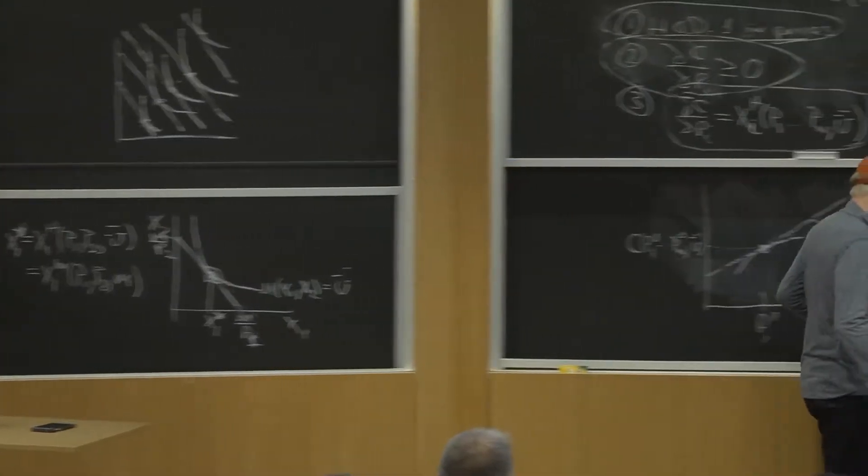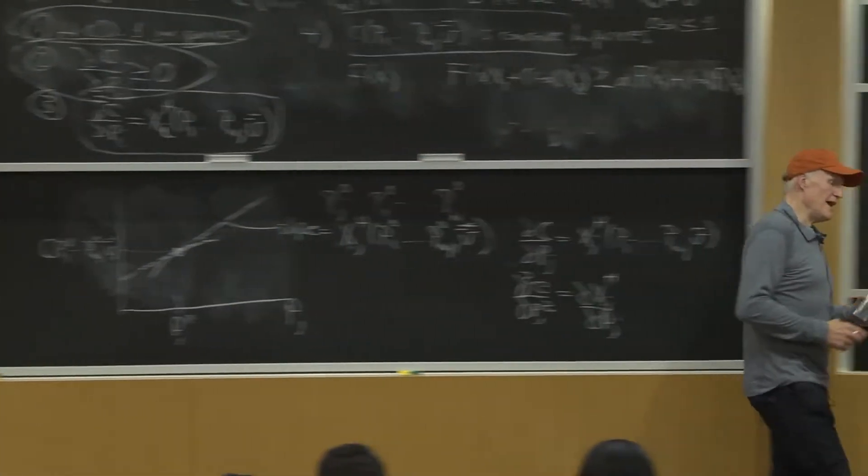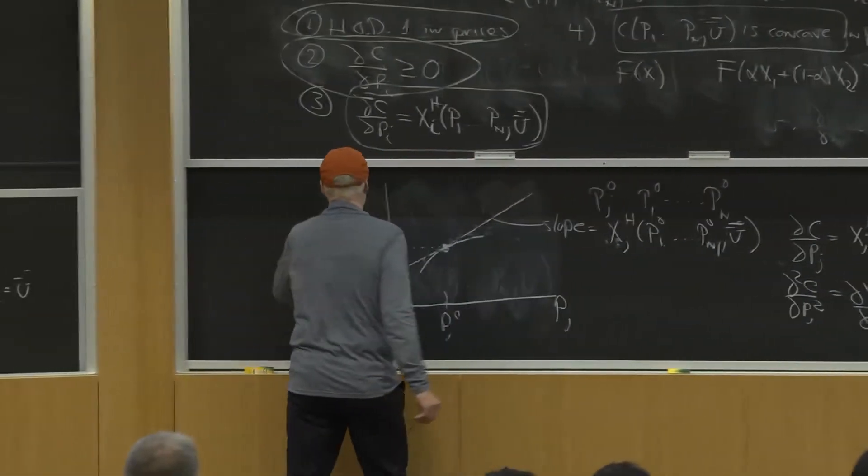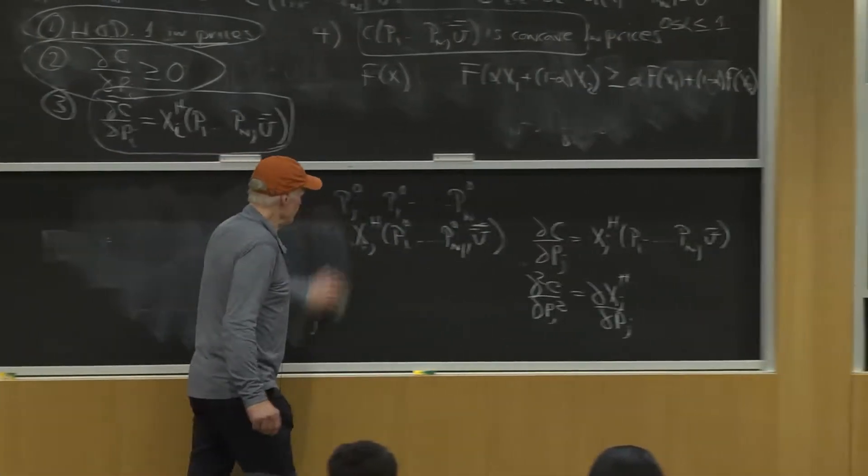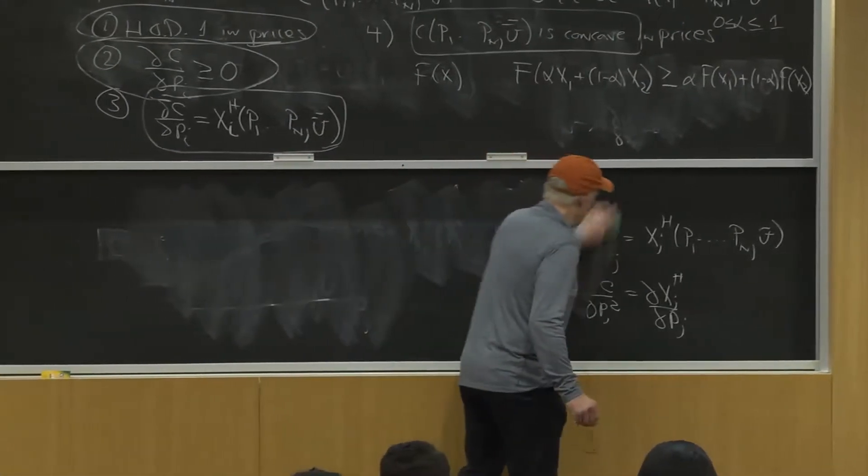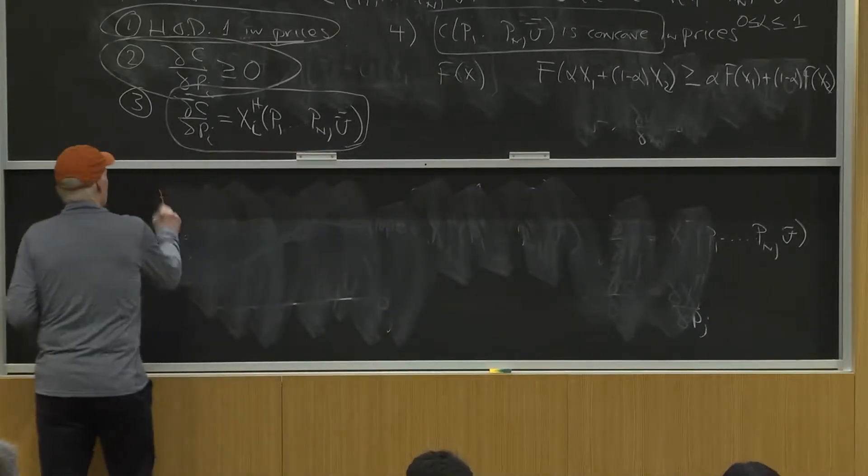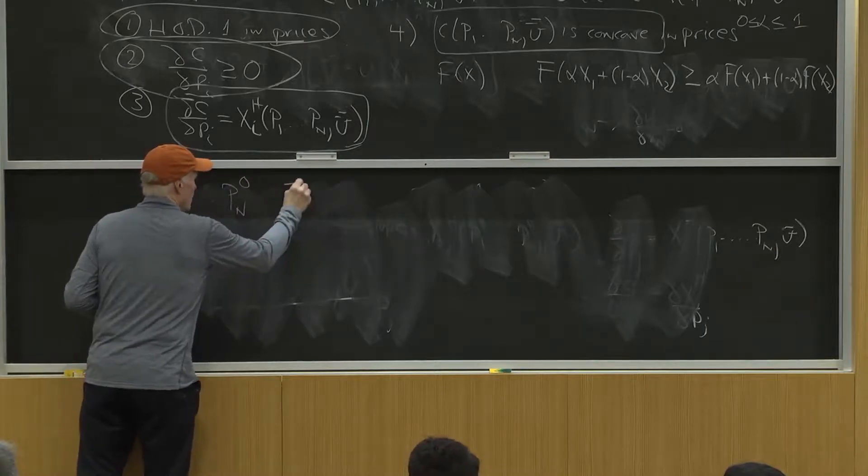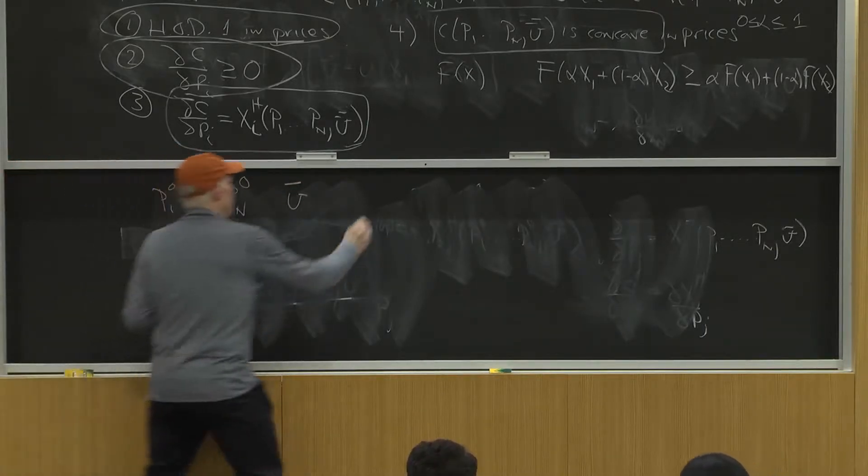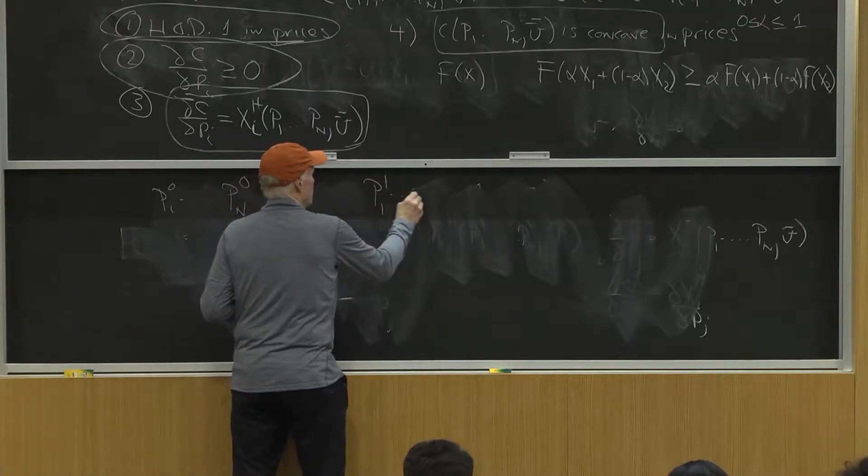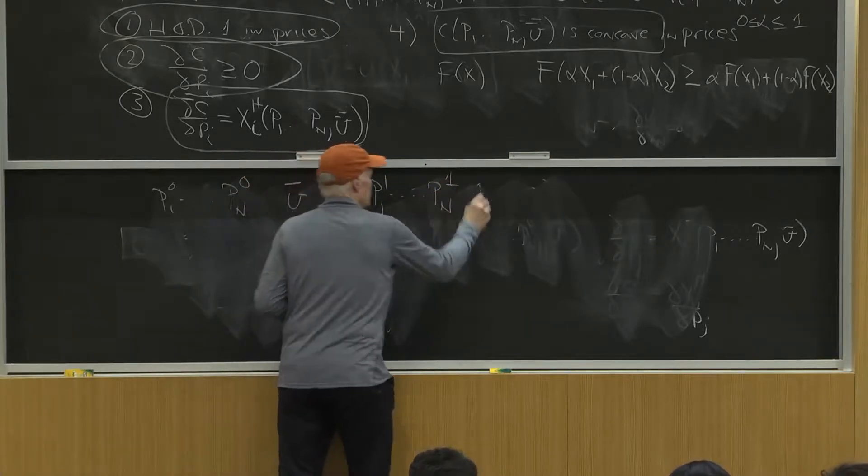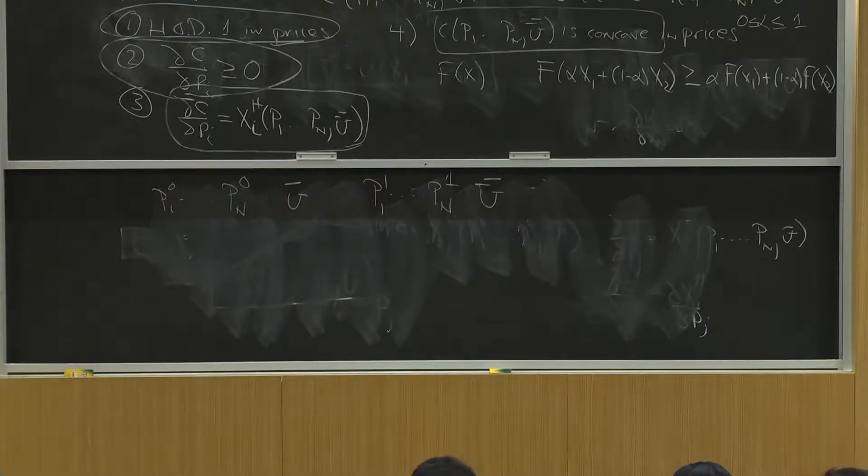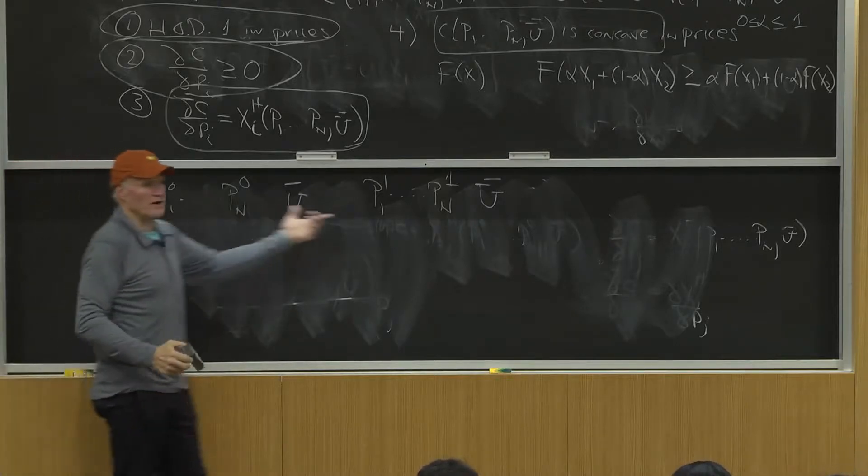Now there's another way to think about this concavity issue. Let's consider two price vectors: P1^0 up to Pn^0, u bar, and P1^1 up to Pn^1, u bar. Same utility level, that's important. I got the same utility level both times but two different price vectors.